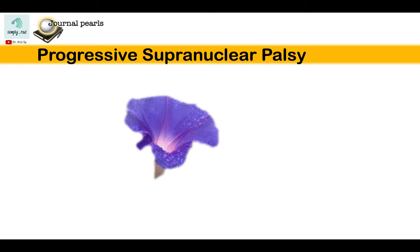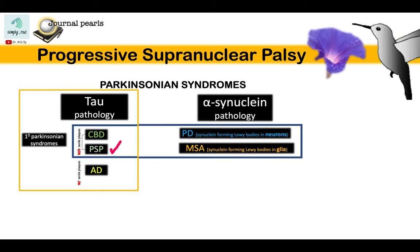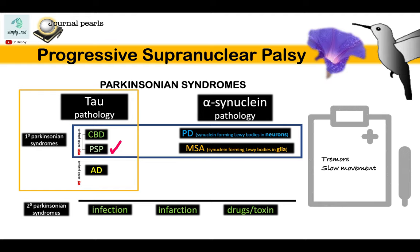Hello, welcome to another Simply Read video. We will be discussing progressive supranuclear palsy, one of the primary parkinsonian syndromes. To label it as primary, we have to exclude other causes such as infection, infarction, and drugs. If the indication for imaging is evaluation of parkinsonism symptoms, we first check for these more common secondary causes; if absent, we consider the primary parkinsonian syndromes.